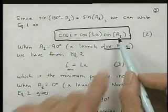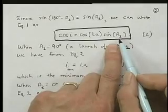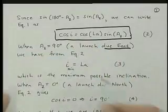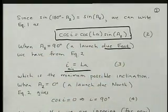If we plug in the value for sine of ninety, that's one, so we get cosine of I equals cosine LA, or I equals LA.